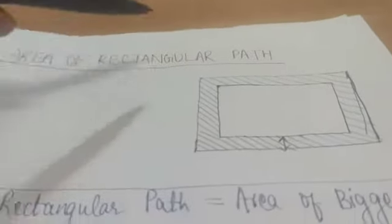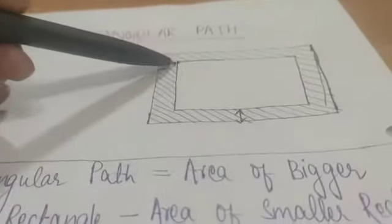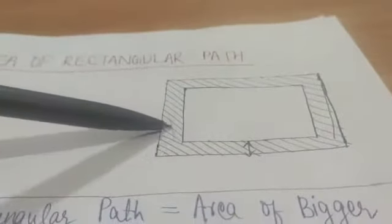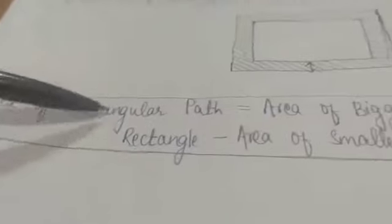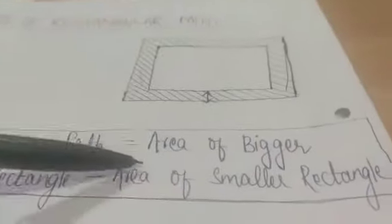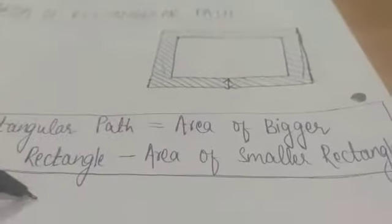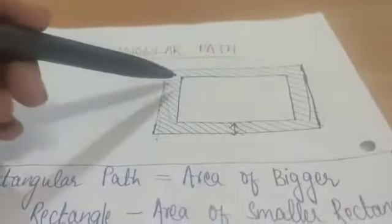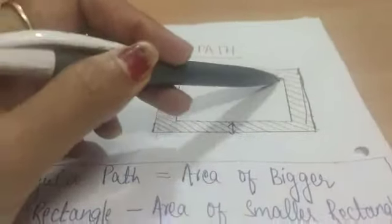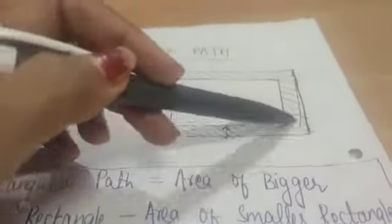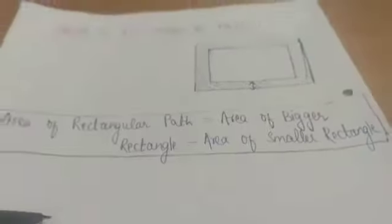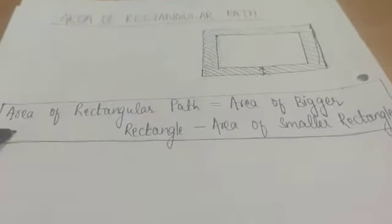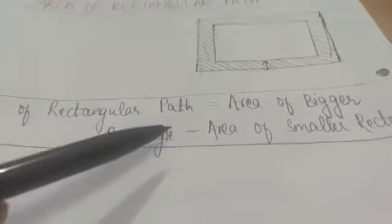The next topic is area of rectangular path. If we have to find the shaded region — that is the rectangular path — we will use the formula: area of rectangular path equals area of bigger rectangle, that means the outer rectangle, minus the area of smaller rectangle, that is the inner rectangle.